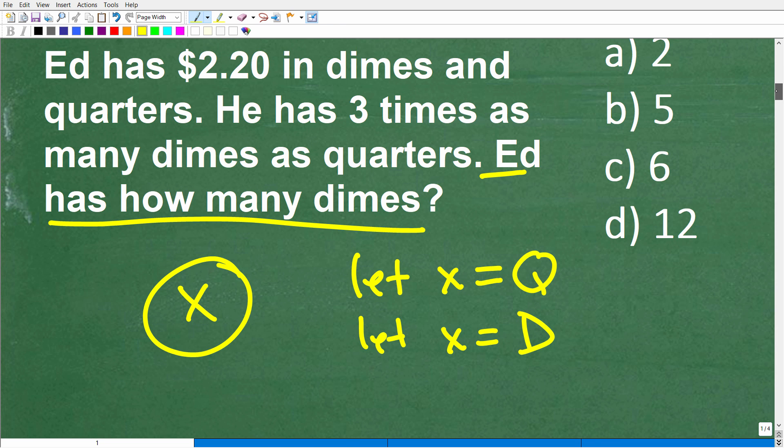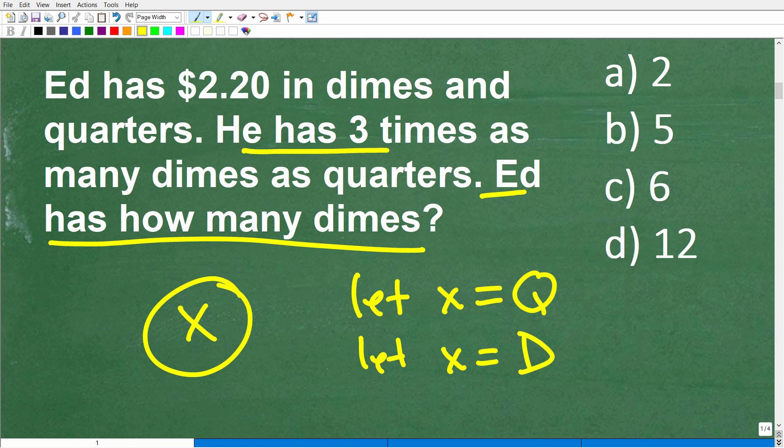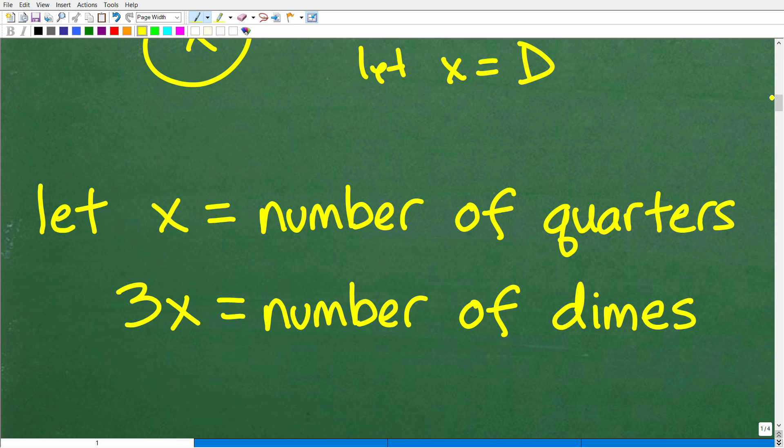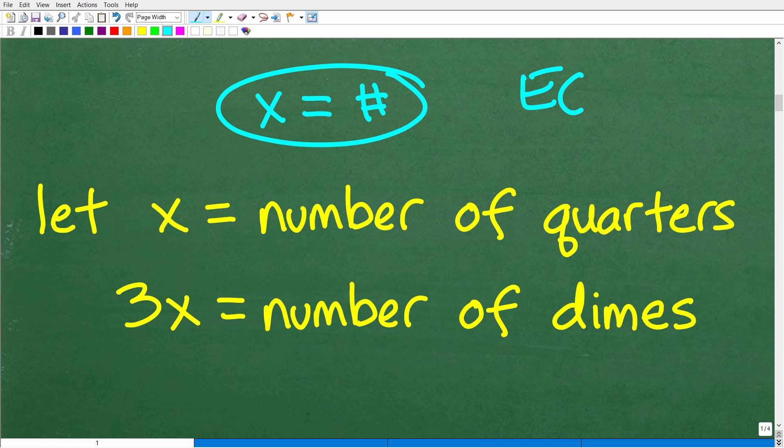I'm going to let x equal the number of quarters. Why? Because the problem says he has three times as many dimes as quarters. So if he has three times as many dimes as quarters and he has x quarters, that means he has 3x dimes. So I'm going to let the variable x equal the number of quarters, and 3x will represent the number of dimes.